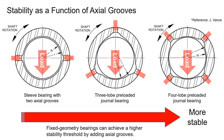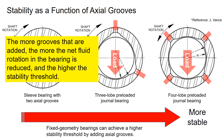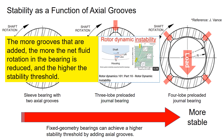Fixed geometry bearings can achieve a higher stability threshold by adding axial grooves. With more grooves, the fluid rotation in the bearing is reduced. Please see the video in Part 10 for more information.